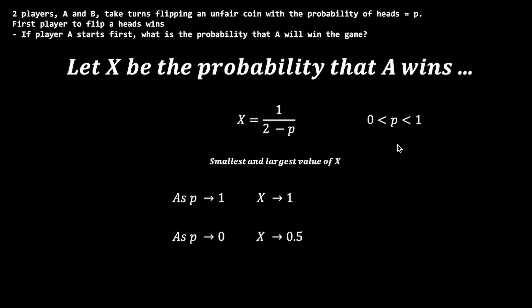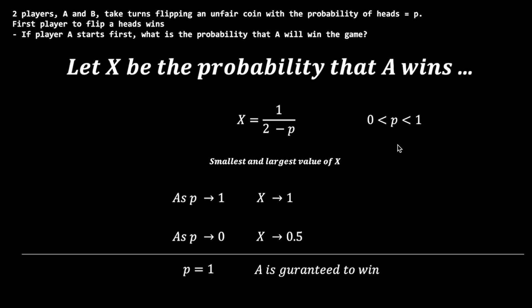As P tends to 0, X tends to 0.5, which is the floor of the probability of A winning. Since the probability of heads gets smaller and smaller, it is unlikely that A will win on the first try. But by simply being the first to flip, A still has an advantage over B. When P equals 1, the coin is guaranteed to be heads — essentially a double-headed coin — so A is guaranteed to win. When P equals 0, there is no way for either A or B to flip heads, and the game continues forever. These two conditions fall outside our diagram, hence the range of acceptable values of P is strictly between 0 and 1.